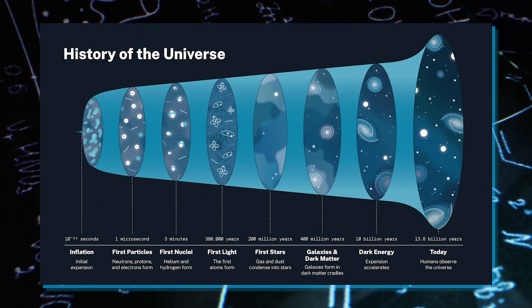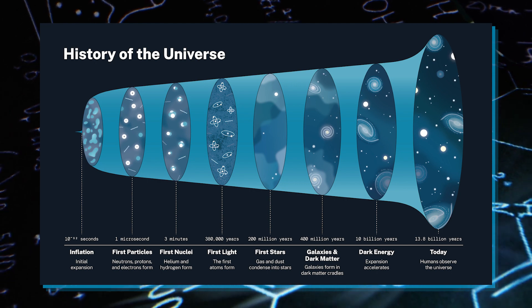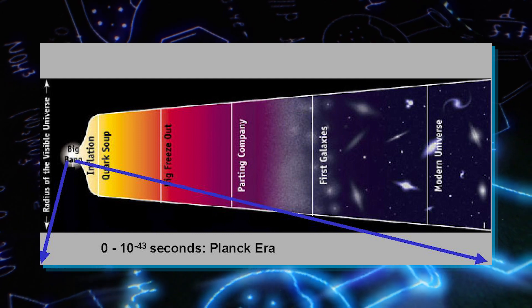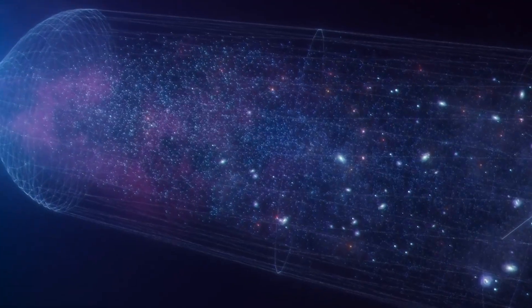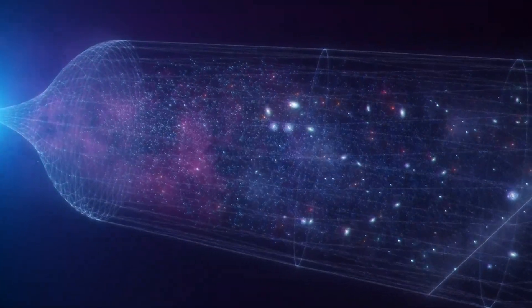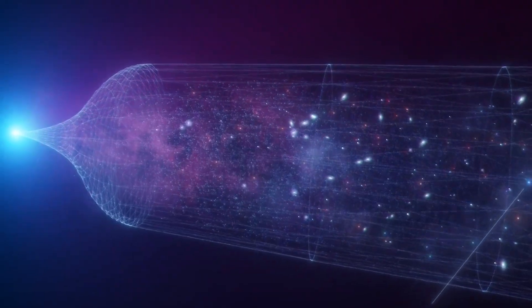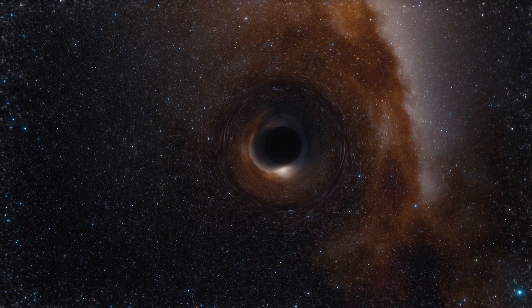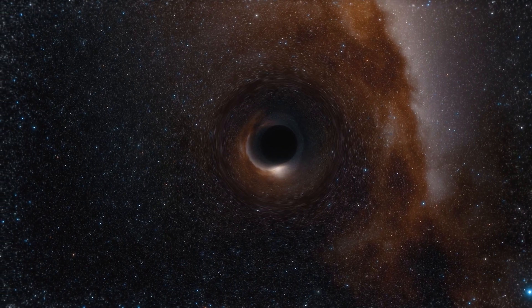The universe began with the Big Bang about 13.8 billion years ago, starting with the incredibly hot and dense Planck epoch. During this period, the universe was extremely tiny. With the Planck time and Planck length as its limits, it was a time of chaos and high energy, leading to the creation of tiny black holes and wormholes.